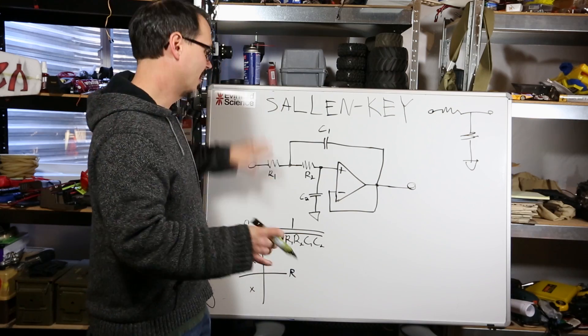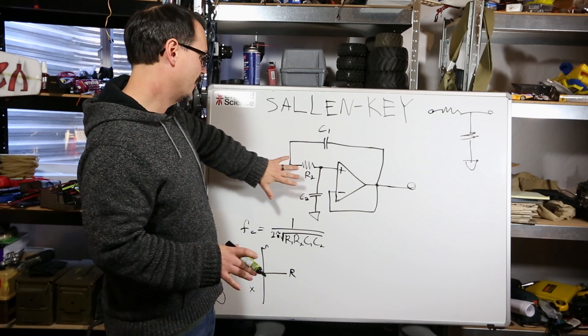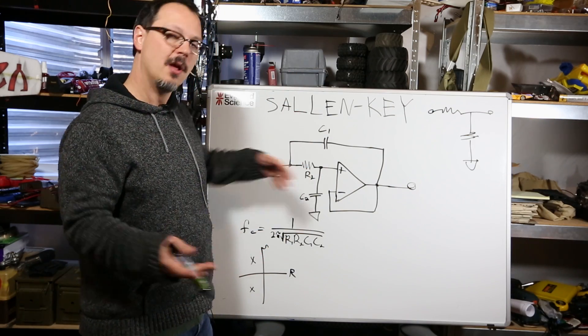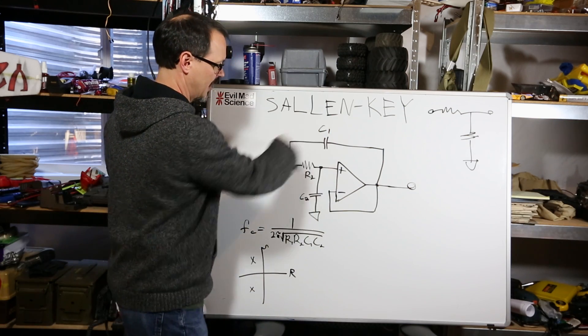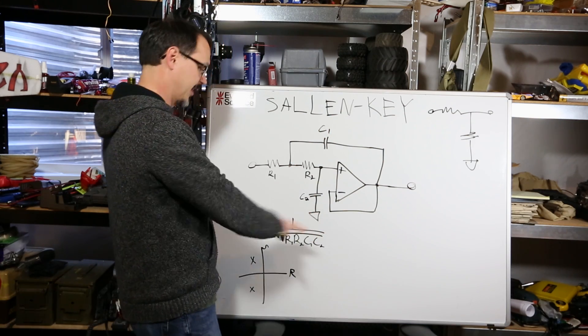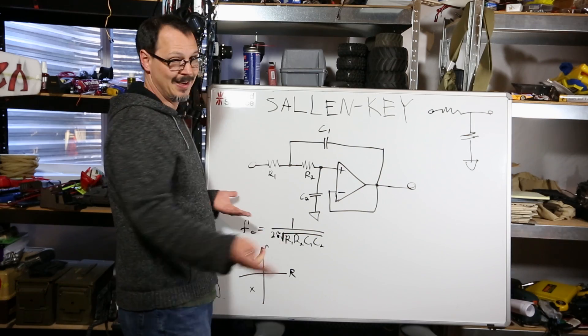I should probably mention, I failed to mention, this is a low-pass. For a high-pass configuration, you basically swap the resistors and the caps for each other, and calculation of the cutoff frequency remains the same.